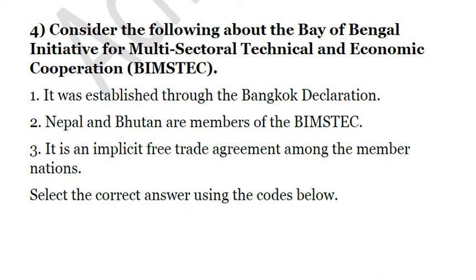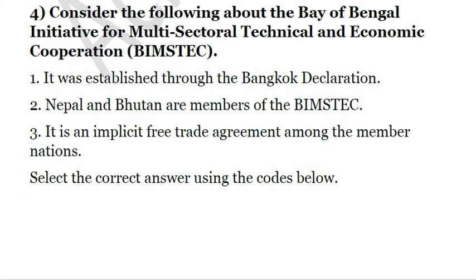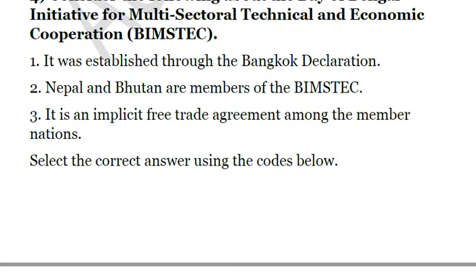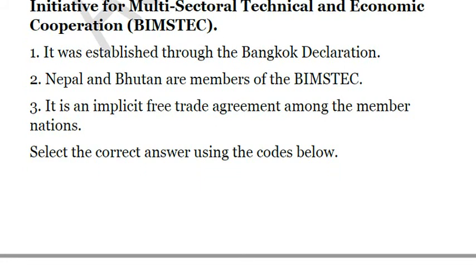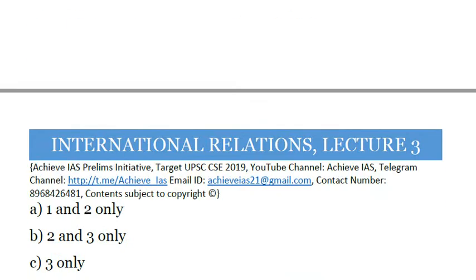The next question is: Consider the following about the Bay of Bengal Initiative for Multisectoral Technical and Economic Cooperation (BIMSTEC). First, it was established through the Bangkok Declaration. Second, Nepal and Bhutan are members of BIMSTEC. Third, it is an implicit free trade agreement among member nations. Only the first two statements are correct. Originally, BIMSTEC stood for Bangladesh, India, Sri Lanka and Thailand, but later Myanmar, Nepal and Bhutan were also added. So the answer is A, one and two only.